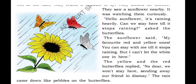They saw a sunflower nearby. It was watching them curiously. Hello, sunflower, it's raining heavily. Can we stay here till it stops raining? asked the butterflies. The sunflower said, my favorite red and yellow ones, you can stay with me till it stops raining, but I can't let the white one in. What a selfish one! The yellow and the red butterflies replied: no dear, we won't stay here, sending away our friend in dismay. What a good friendship — the two butterflies denied the offer of the sunflower because they are good friends.